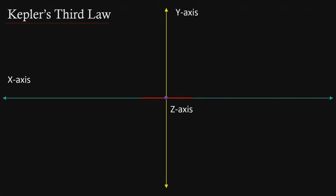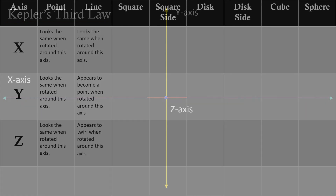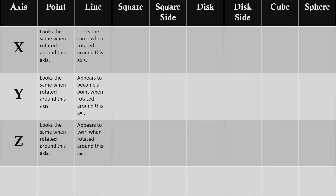We'll start with the red line on the x axis and rotate it around the z axis — you can see it's basically twirling like a baton. Rotating around the y axis, a line will appear to reduce down to a point after 90 degrees and then return to a line after 180 degrees. And if we rotate a line around the x axis, the line will appear not to change at all — just like what we saw with a point.